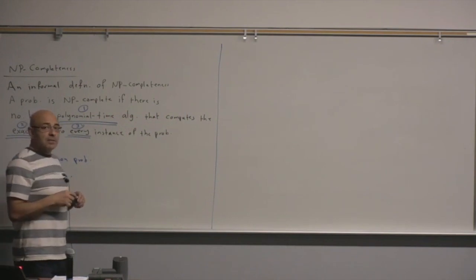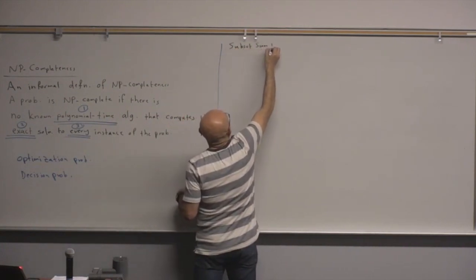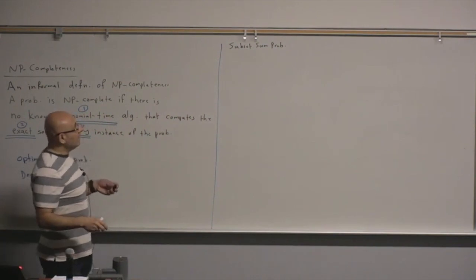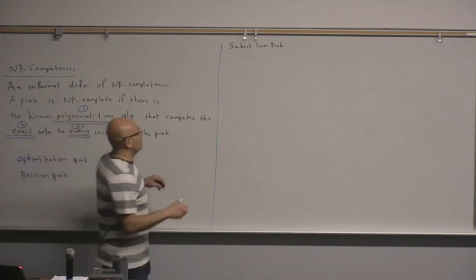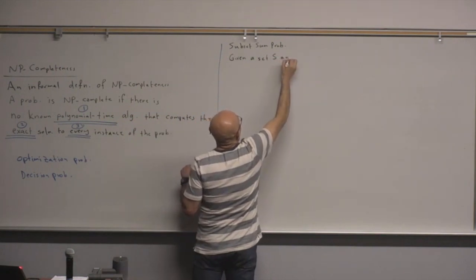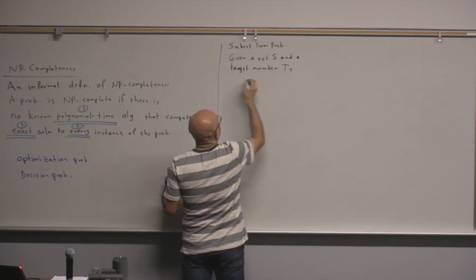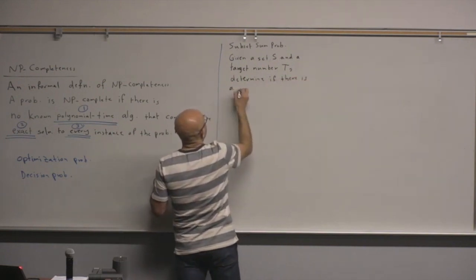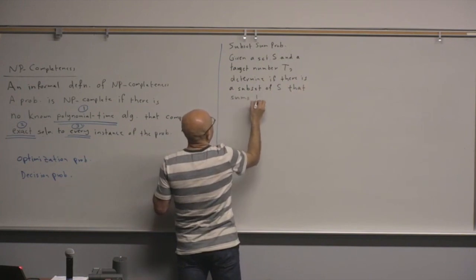Let's give two examples of problems that are known to be NP-complete. One is the subset sum problem. You are given a set and a target number, and the objective is to determine whether there is a subset of this set that sums to this number. So given a set S and a target number T, determine if there is a subset of S that sums to T.